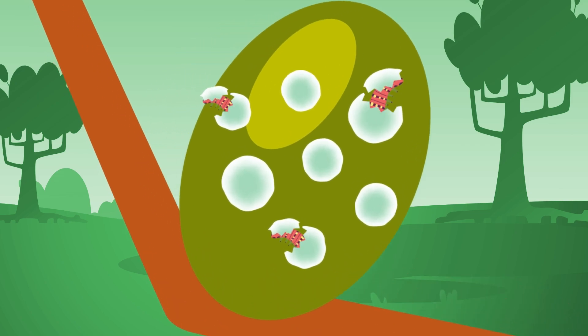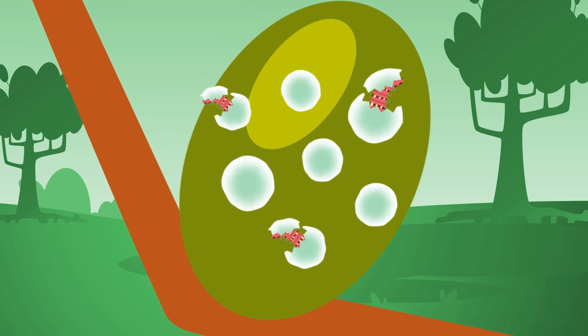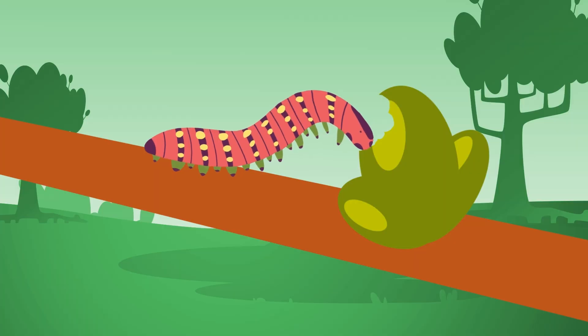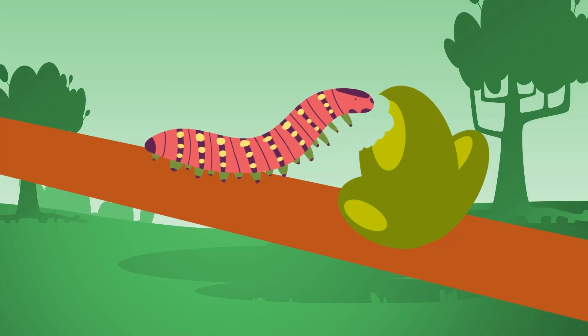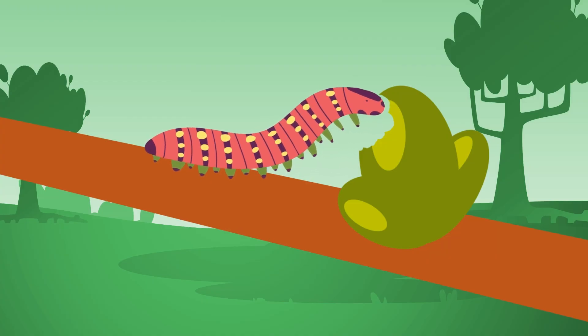When the egg hatches, the second stage starts. It's called larva, also called a caterpillar. In this stage, the caterpillar feeds and feeds on food—the plant the egg was laid on that the butterfly will eventually use.